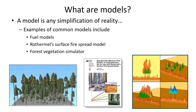Some examples of common models in natural resources and fire include fuel models - a numerical representation of our complex three-dimensional fuel complex - and Rothermel's surface fire spread model. Some of you may have experience with the Forest Vegetation Simulator, a forest growth model that can project how your forest will grow and develop based on current conditions and either no management action or particular silvicultural prescriptions. In all cases, these are simplifications of reality that we make in order to develop predictions about the future.